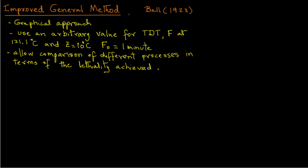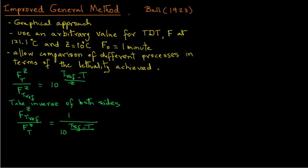Recall again from another tutorial on F values that we can write F_T_Z divided by F_Tref_Z equals 10 raised to the power Tref minus T over Z. Now if we take inverse of both sides of this equation, we will get F_Tref_Z divided by F_T_Z equals 1 over 10 raised to the power Tref minus T divided by Z.